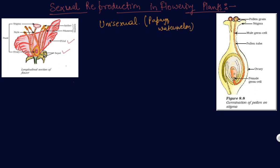When it contains either stamens or carpels, it's unisexual. One should be there. If they have both the carpel and stamens, they are bisexual.